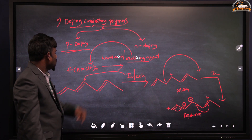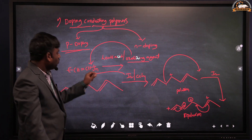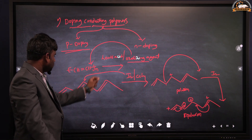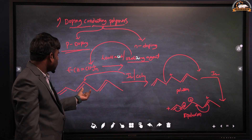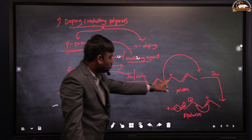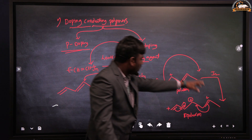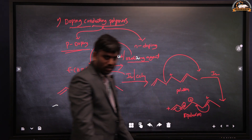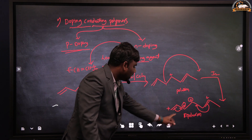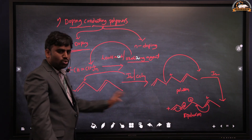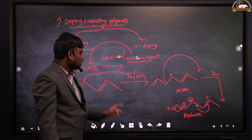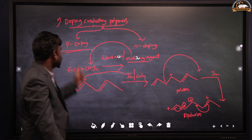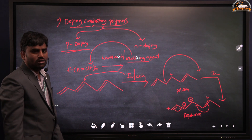In summary for p-doping: taking polyacetylene and adding an oxidizing agent or Lewis acid — that oxidizing agent takes electrons from the polyacetylene molecule, positive charge forms. Adding one more time, one more positive charge forms. This positive charge and pi electrons are continuously moving throughout the backbone of the polymer chain, and the polymer exhibits conductance — known as positive doping conducting polymers.